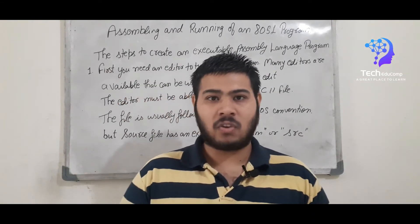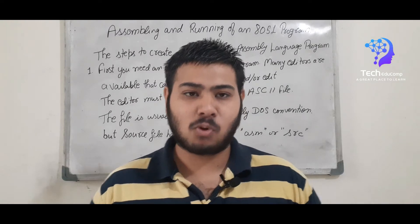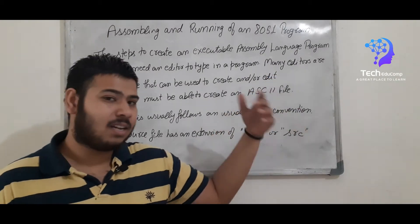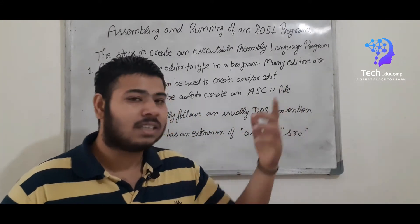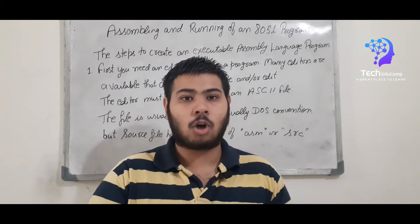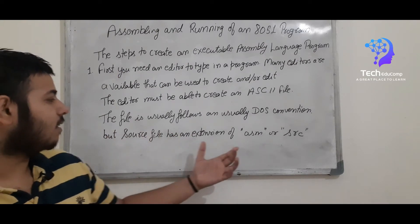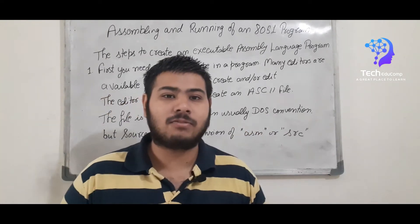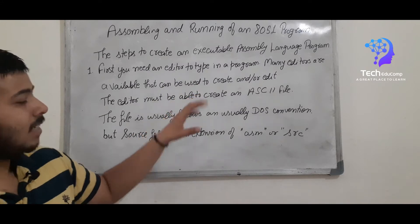They are Keil, VS Code, and Notepad. These are some excellent editors used to create an assembly language program. The editor must be able to create a source file. The file usually follows a DOS convention, meaning the extension used for a file — so like for an image it's .png or .jpg — similarly, for a source file, we have extensions .ASM or .SRC. These are the two extensions used to name the file.